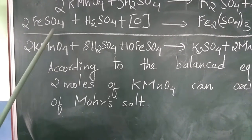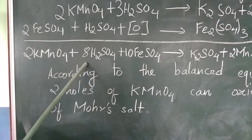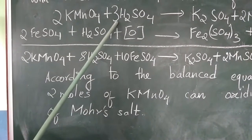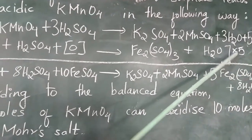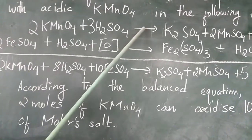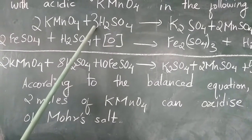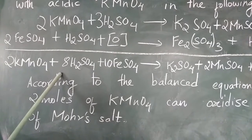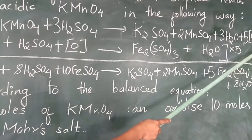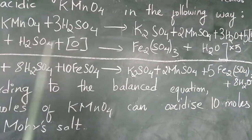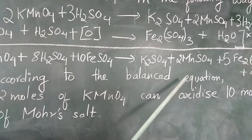In the overall equation we have 2KMnO4. If you are confused with this 8H2SO4, here there is 3H2SO4 and here there is 5 because the whole equation is multiplied by 5. So on the same side of the arrow, same species will get added — 3 plus 5 becomes 8. The 5 nascent oxygen on opposite sides of the arrow cancel, and ultimately we get the overall balanced equation.